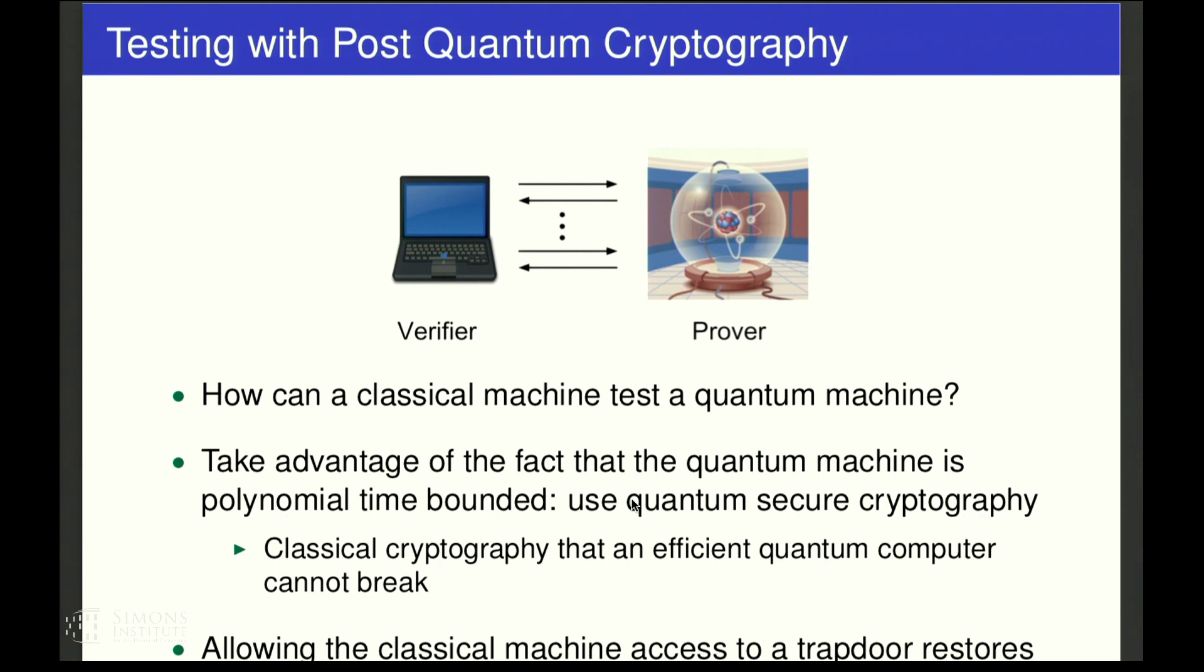For example, with a one-way function, access to the trapdoor would allow the verifier to invert the one-way function while the quantum prover still could not invert the function. In this way, by giving the verifier access to something that the quantum prover does not have, we can level the playing field between a classical verifier and a quantum prover.